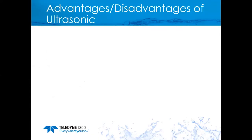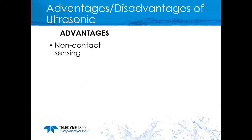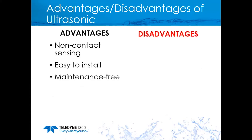Advantages of an ultrasonic sensor: it's a non-contact sensor mounted above the flow stream, making it easier and safer to install. It's maintenance-free because it's above the flow stream — no worry about cleaning debris or rags hanging up on it. Disadvantages include the deadband; depending on your application, you may not have enough clearance above the flow stream. The beam angle can also be a problem in narrow channels, where the beam may hit side walls and produce false echoes.